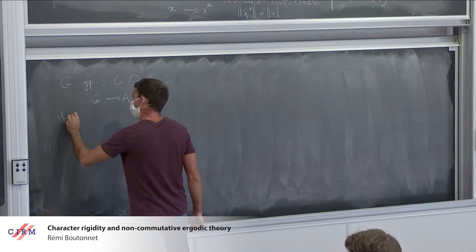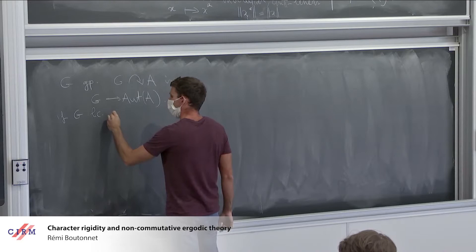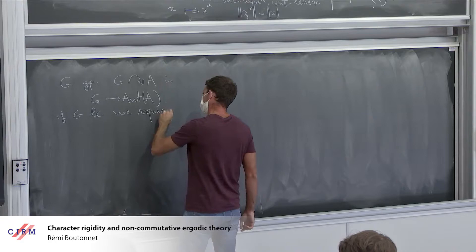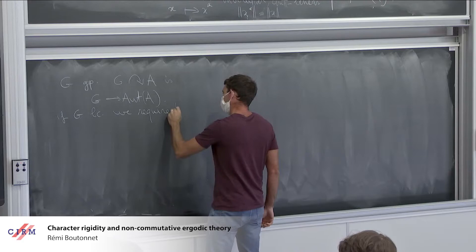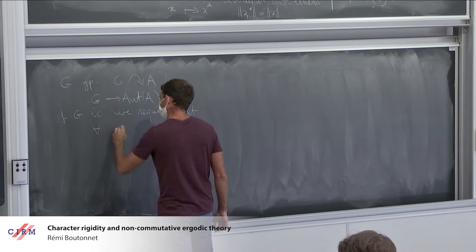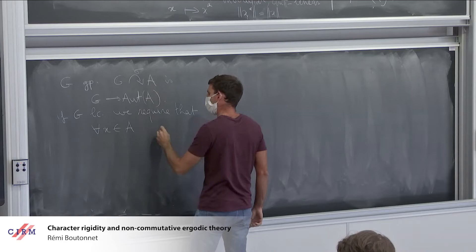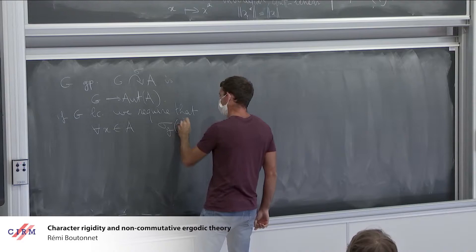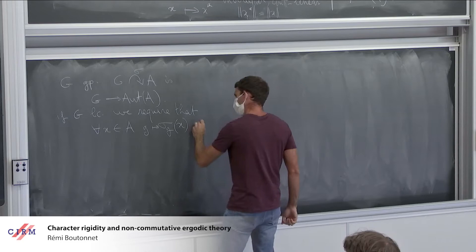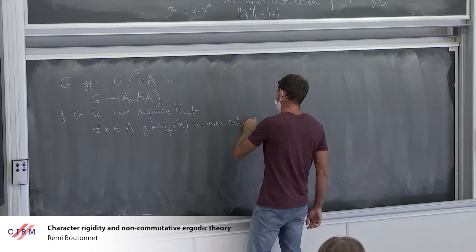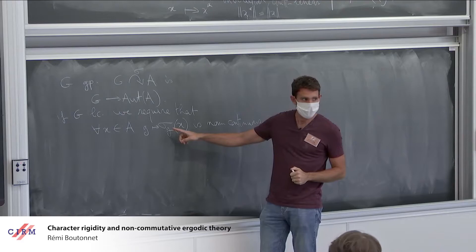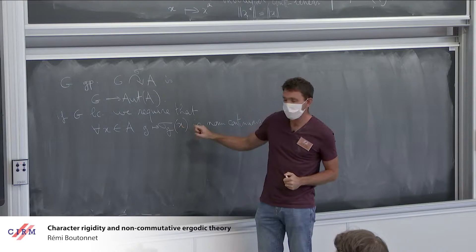Let's assume that G is a locally compact group, and we require some continuity of this map. Whenever you take X in A, the map — let's denote it by sigma — is continuous. In other words, if you take a sequence of elements G_n going to the identity, then sigma(G_n) of X will tend to X in the norm inside A. That's just maybe a detail.